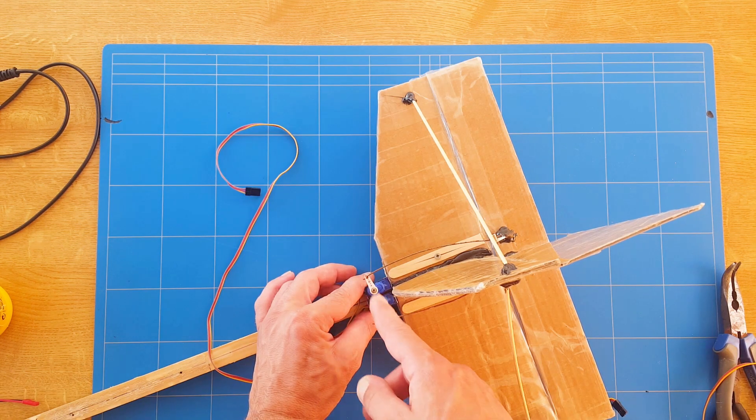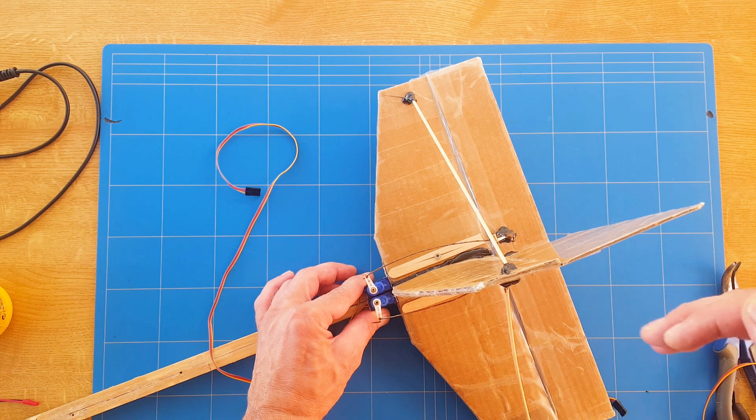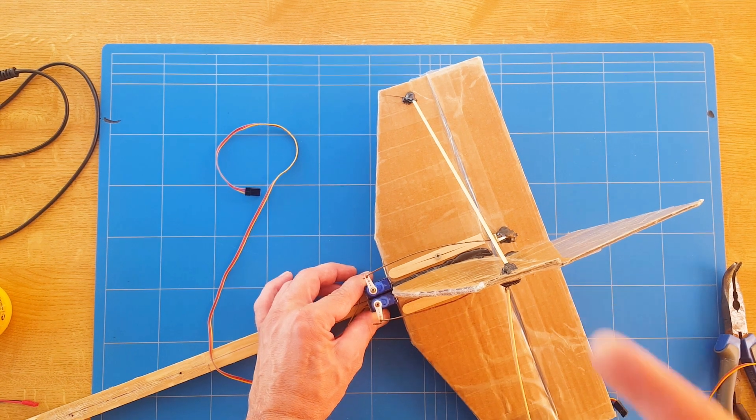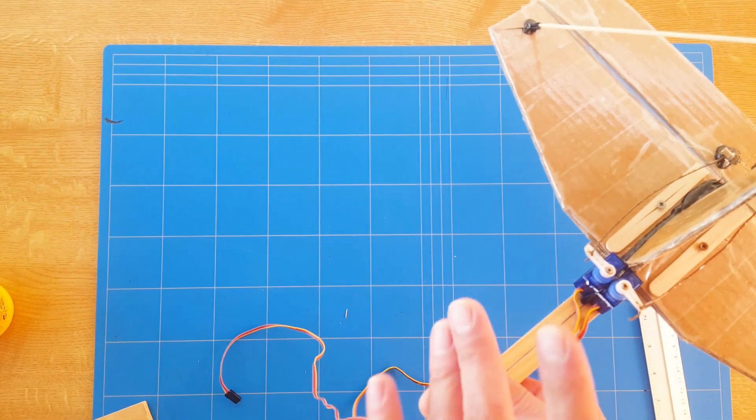When you're setting the servos, make sure that they are centered up and that as well that the rudder and elevator are completely nice and centered and level. Then it's time to glue them down with hot glue. Now we just let the hot glue dry out for a couple of minutes, making sure it's really hardened out.